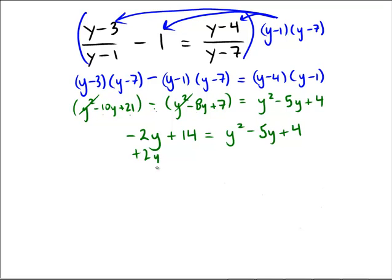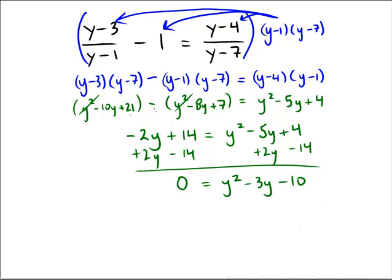And so now, we'll move everything over to the same side. In this case, I'll move it over to the left to make it easier. Oh my goodness, am I getting the same? I'm almost getting the same numbers, I think. 0 equals y squared minus 3y minus 10. I think those are exactly the same numbers.